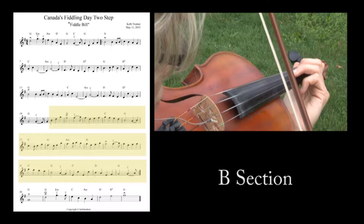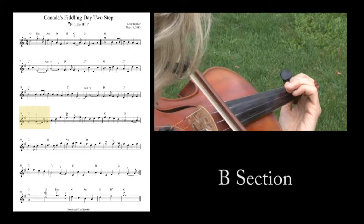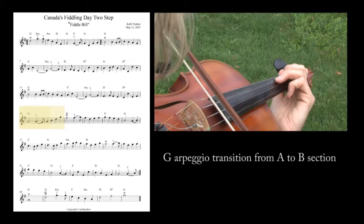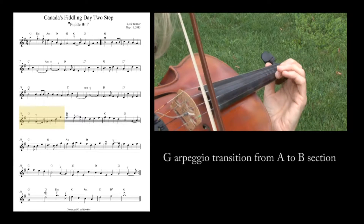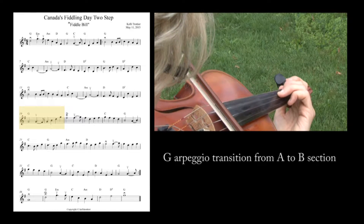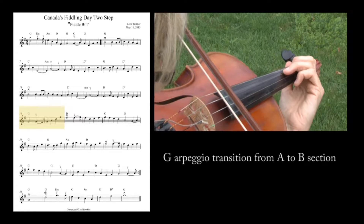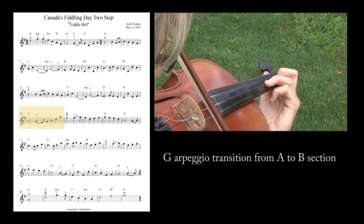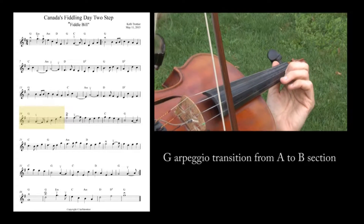This is the B section of the tune. We've just finished the A section with this. On that last G, I want that to be your first note of a G arpeggio. You're coming out of the first part with this very last little phrase here, and then that takes us into the second part to an F sharp on a down bow.